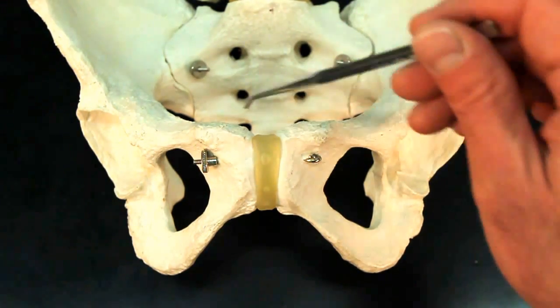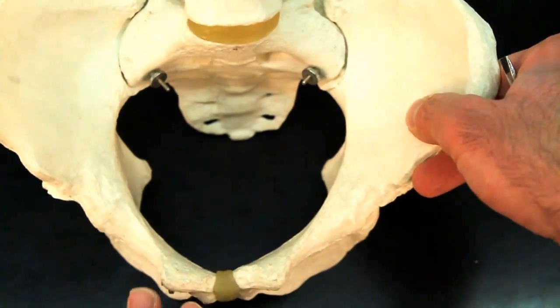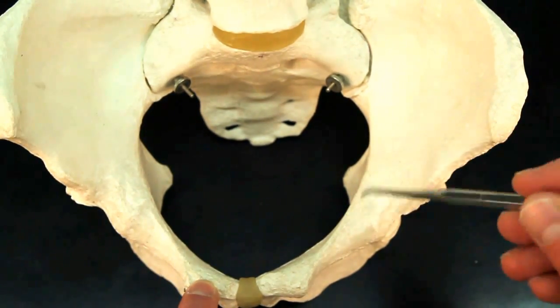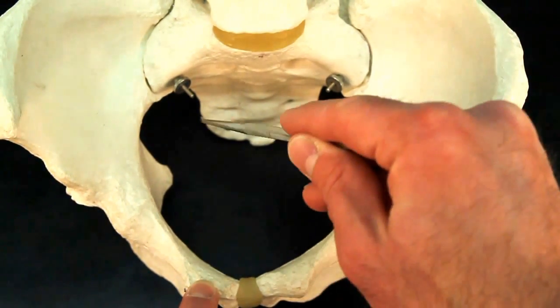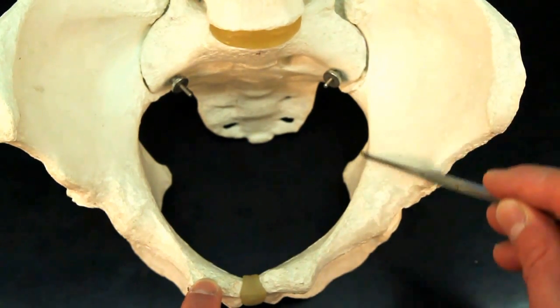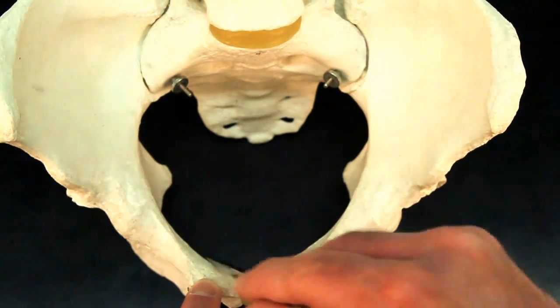But the larger area, if we stand up like this and we're looking down into the pelvis, this whole opening going around here, the edges, is known as the pelvic brim.